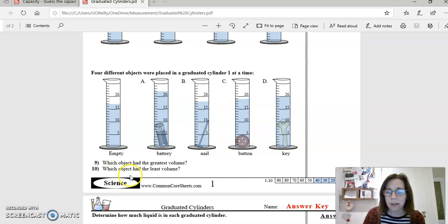And then it says, which object had the least volume? So which of the objects - the battery, the nail, the button, or the key - gave the least rise in the water level?